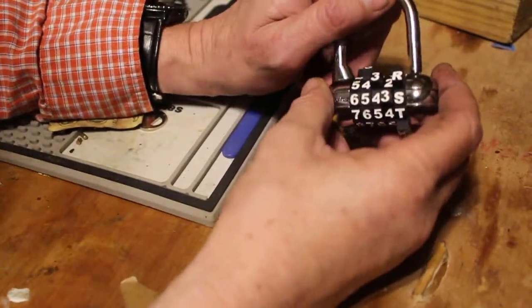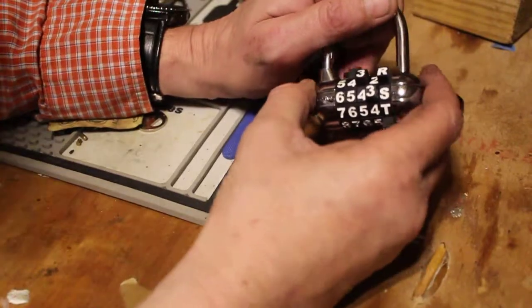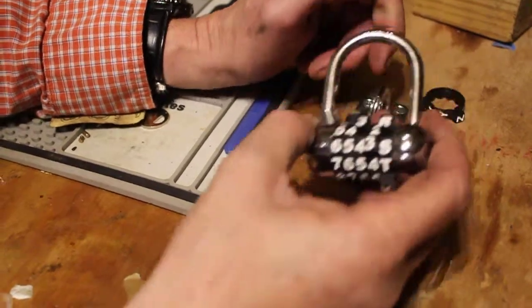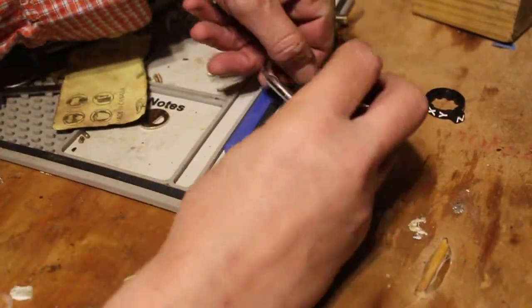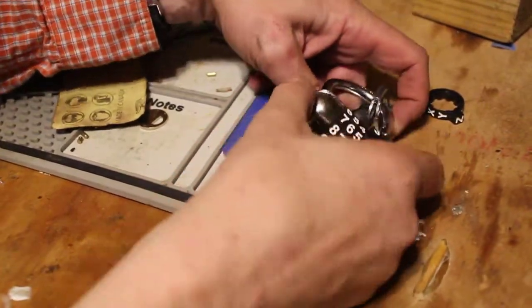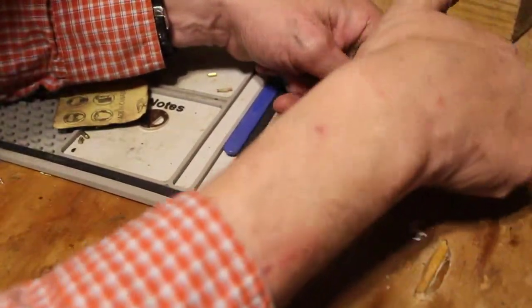So we went with 6543S. When you're decoding these you have to apply a pretty significant amount of tension on the shackle, so we have this little hasp here. I'm going to go ahead and lock it up to the hasp.